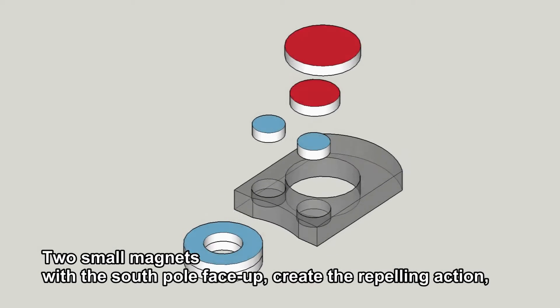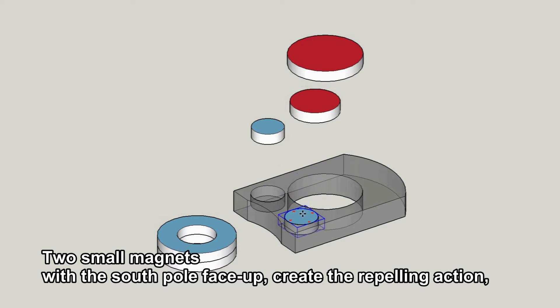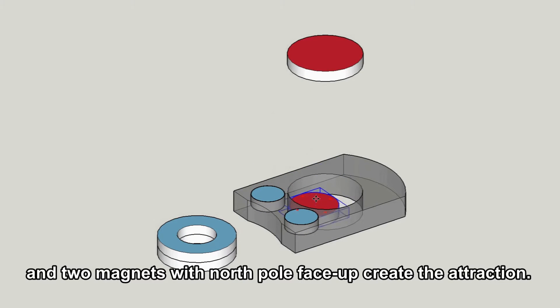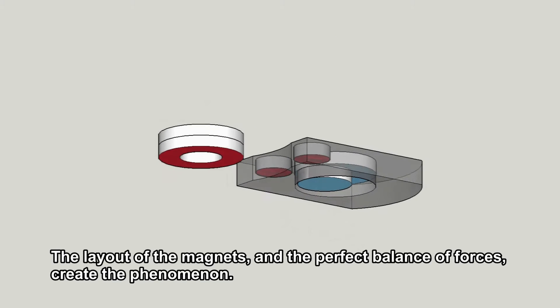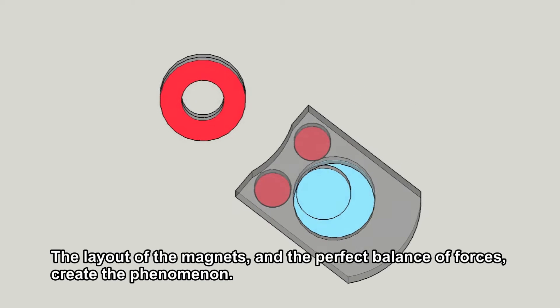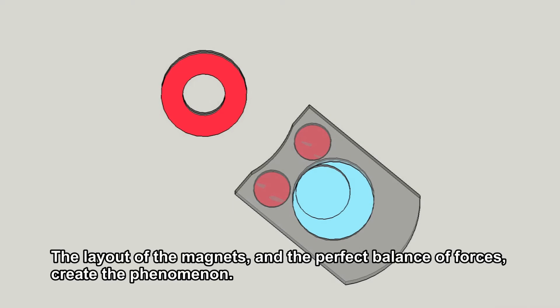Two small magnets with the south pole facing up create the repelling action, and two magnets with north pole facing up create the attraction. The layout of the magnets and the perfect balance of forces create the phenomenon.